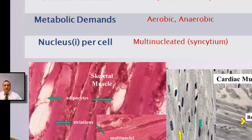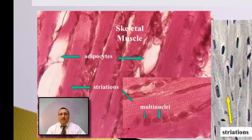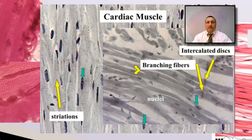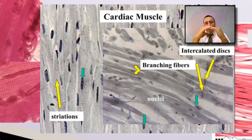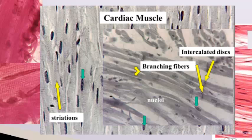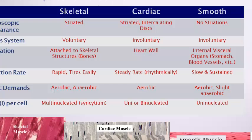Under the microscope, skeletal muscle is striated, meaning it has alternating light and dark bands consistent throughout its cross-section, giving it the appearance of earthworms in a paper sack. Cardiac muscle is also striated but more lightly; its distinguishing characteristic is intercalated discs, where the end of one cell overlaps and fuses with the beginning of the next, creating a denser band when stained. Smooth muscle does not have striation.